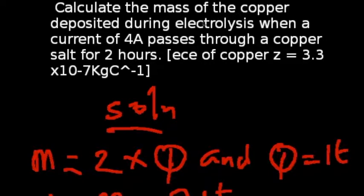Question 46 of the JAM 2014 physics is what we are looking at. Calculate the mass of the copper deposited during electrolysis when a current of 4 amperes passes through a copper source for 2 hours.